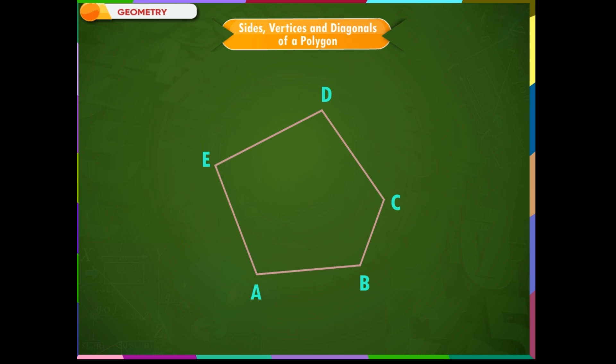The line segments forming a polygon are called its sides. This polygon has five sides: AB, BC, CD, DE, and EA. The points at which the sides meet are called vertices.